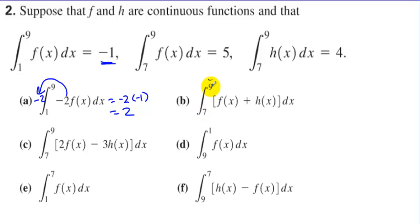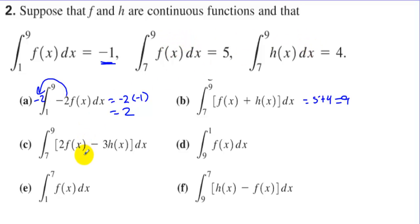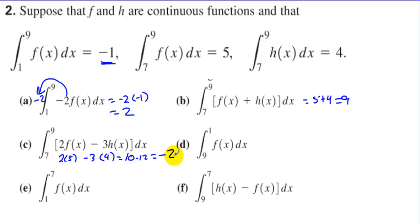Letter B: integral from 7 to 9 of f(x) plus h(x) equals 5 plus 4, which is 9. Letter C: integral from 7 to 9 of 2f(x) minus 3h(x) equals 2 times 5 minus 3 times 4, which is 10 minus 12, giving negative 2.